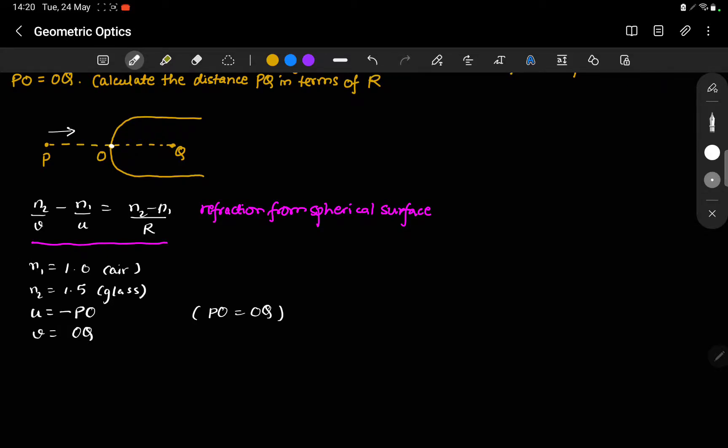Substituting these values over here gives us 1.5 divided by OQ minus 1 divided by minus PO is equal to 1.5 minus 1 over R, R being the radius of curvature. So let us simplify this.